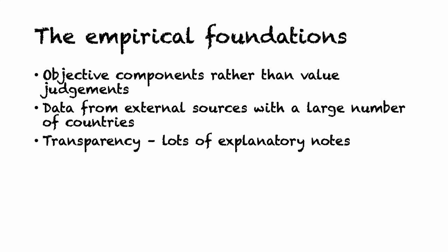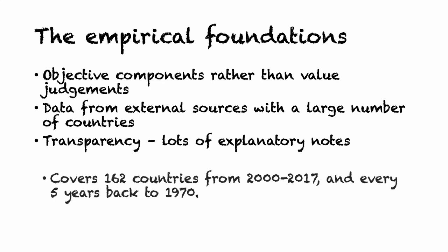The index covers 162 countries, going every year from 2000 to 2017, and going back further but only covering data every five years, because prior to 2000 countries weren't providing data on a regular basis. There are 42 variables included in the index, and those variables are ranked on a scale of 1 to 10 — 10 being good, 1 being bad. So the bigger the number, the better it is for your country.